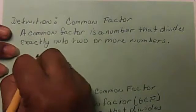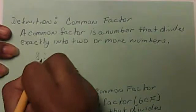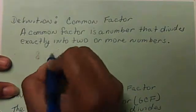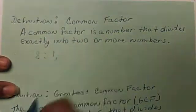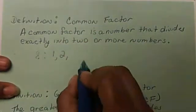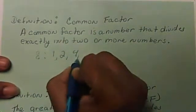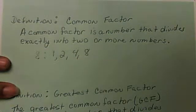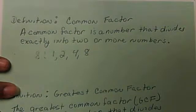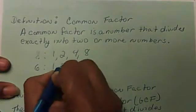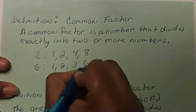So I'm going to list the factors of 8. The factors of 8 are going to be 1, 2, 4, and 8. Then I'm going to list the factors of 6, which is 1, 2, 3, and 6.